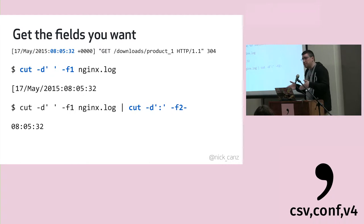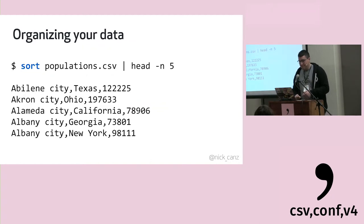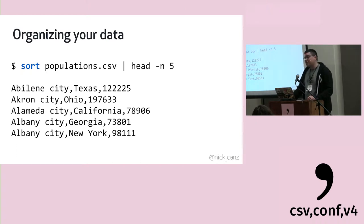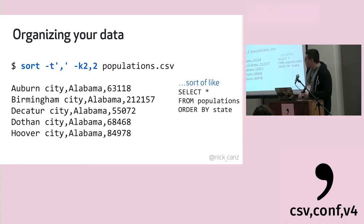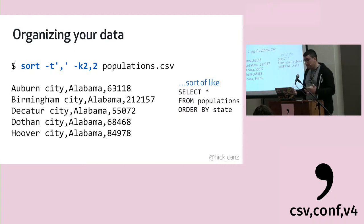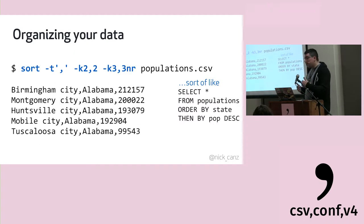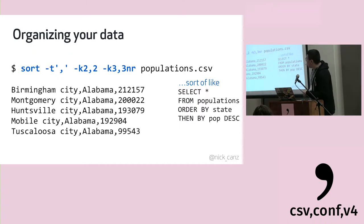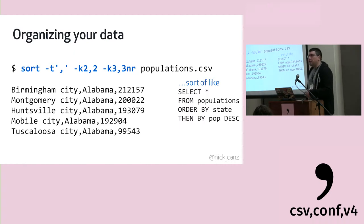'sort' does what it's named. By default it sorts the whole line alphabetically, but generally you want to give it a key column. In this example we're sorting by state alphabetically. It gets more interesting with multiple key columns — here we're sorting by state alphabetically and then by population numerically (that's what the 'n' flag is for, treating it as a number). The 'r' flag means reverse, so it orders descending with the biggest cities at the top.